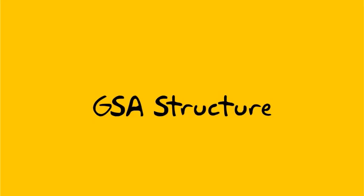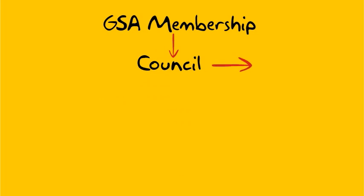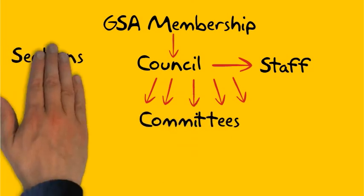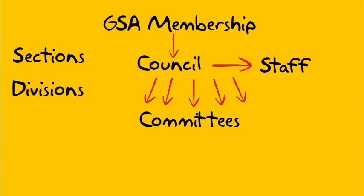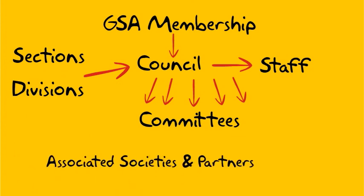To look at it all in one place: you have GSA membership, which is represented by GSA Council, which gives a charge to GSA staff to run programs. Then Council seeks information and input about various issues using committees. GSA membership is also divided up into sections and divisions, which can also provide input back into GSA Council. And finally, there is a group of associated societies and partners that work with GSA on a whole number of programs.